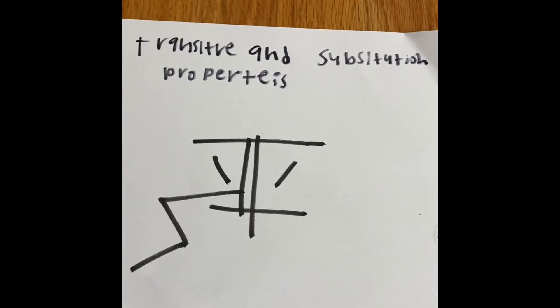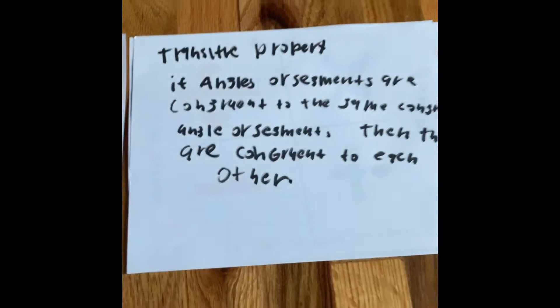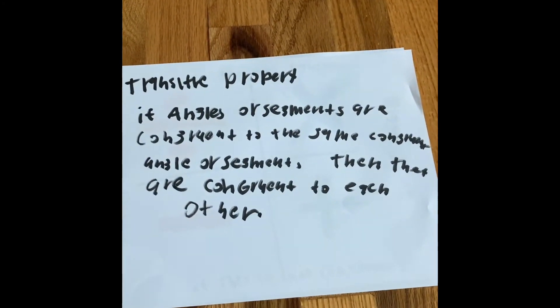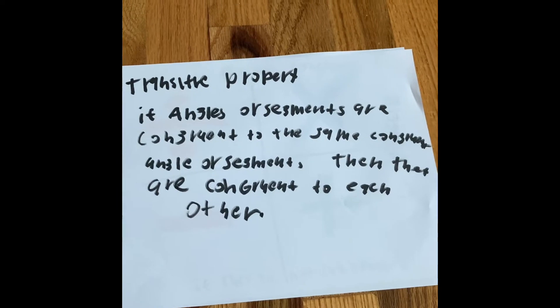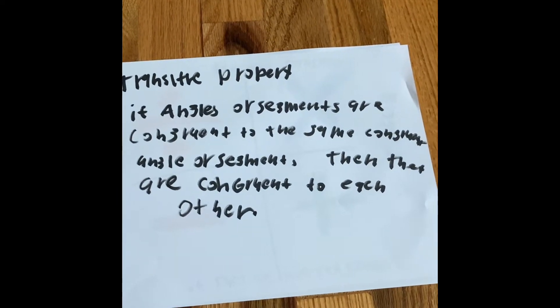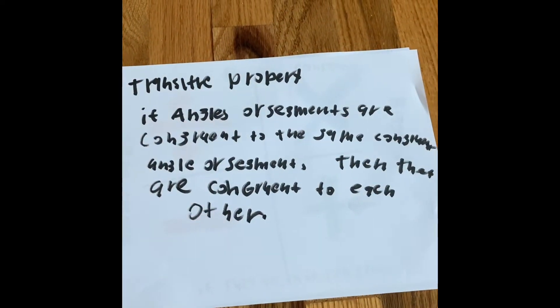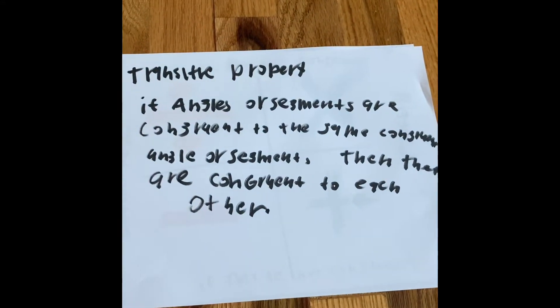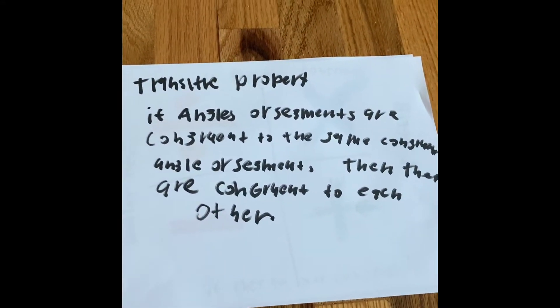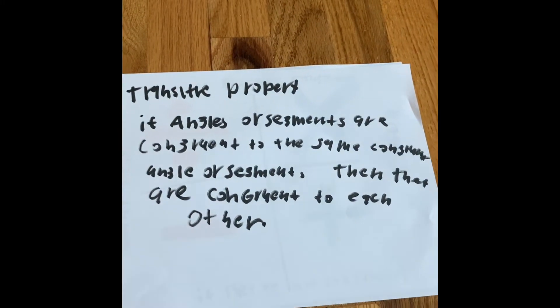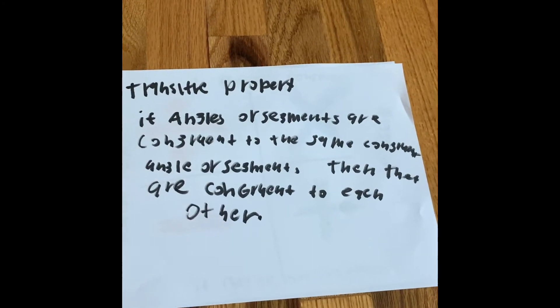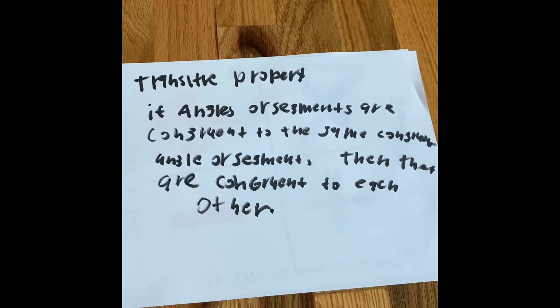Let's look at the transitive property. If angles or segments are congruent to the same congruent angles or segments, then they are congruent to each other. So that is saying, if angles or segments are congruent to the same angle or segment that's also congruent, then both of them are also congruent.